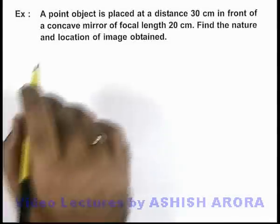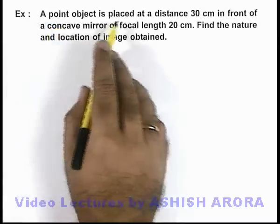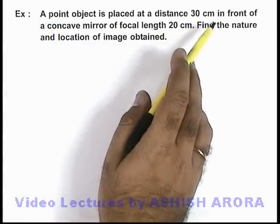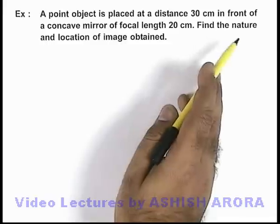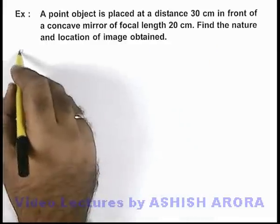In this example, a point object is placed at a distance 30 centimeter in front of a concave mirror of focal length 20 centimeter. We are required to find the nature and location of image obtained.